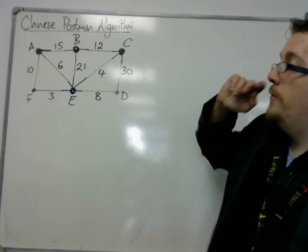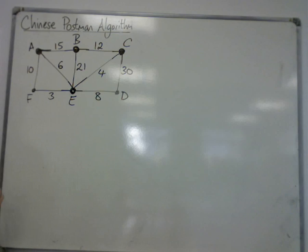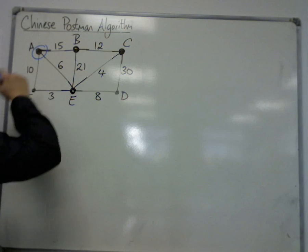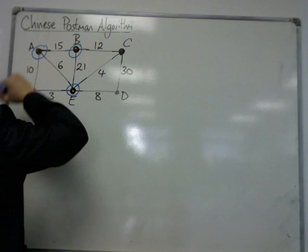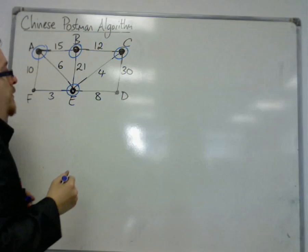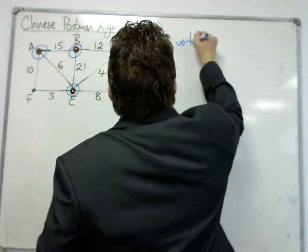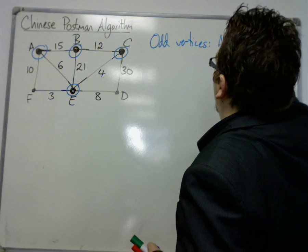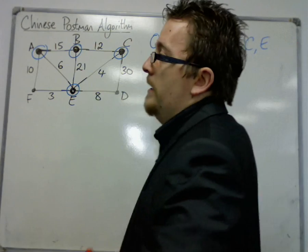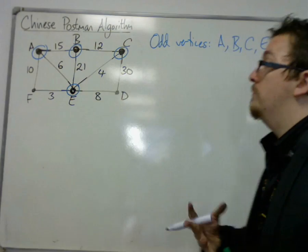So, I look at the graph and I think, well, we've got four odd vertices here, and I've got one at A, because that's got order 3, E has order 5, B has order 3, and C has order 3. So, we make sure the examiner knows that we know what we're talking about by writing that the odd vertices are A, B, C, and E. So, that's the first thing that you do whenever you hit a Chinese Postman algorithm problem.